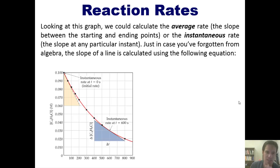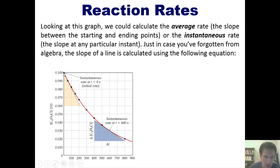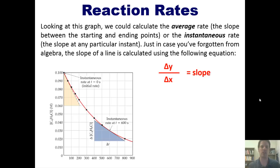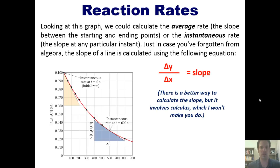Looking at this graph, we could calculate the average rate over the entire reaction — that would be the slope between the starting and ending points. Or we could calculate the instantaneous rate at any given moment by calculating the slope between two specific points. The slope of a line is calculated using delta y over delta x. There is a better way using calculus, but that's not a prerequisite for this course.